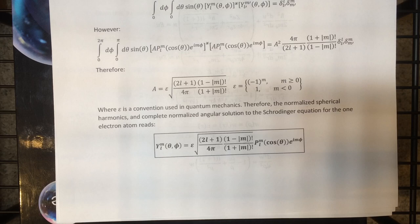So we insert this value of the normalization constant, and we get the final completely normalized solution to the angular part of the Schrödinger equation for the one-electron atom as the standard orthonormal spherical harmonics. Now we can look at the radial equation, which is by far the most difficult to deal with.